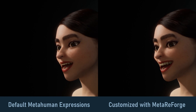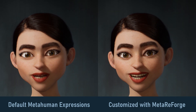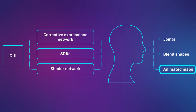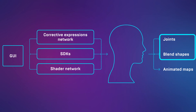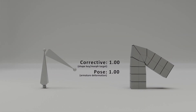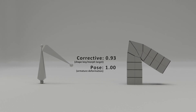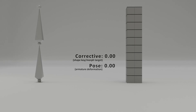Before we dive into the customization process, let me give you a quick overview of how MetaHuman animations work. MetaHuman animation combines skeletal animation, morph targets (known as shape keys in Blender), and dynamic materials which blend normal maps and diffuse textures. While dynamic materials are a separate topic, skeletal animations and morph targets share a common purpose: they both deform the mesh. MetaHumans use both to achieve cinematic quality realism at the best level of detail.